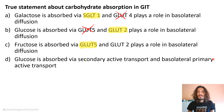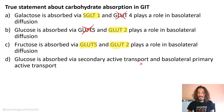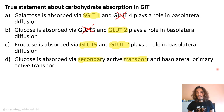Evaluating the answer options: galactose absorbed via SGLT1 is true, but at the basolateral segment it goes through GLUT2, not GLUT4 — so that option is wrong. Glucose absorbed via GLUT5 is wrong; glucose uses SGLT1. Fructose absorbed via GLUT5 is true, and GLUT2's role at the basolateral segment is also true. The wrong statement — about the basolateral segment — is the answer.